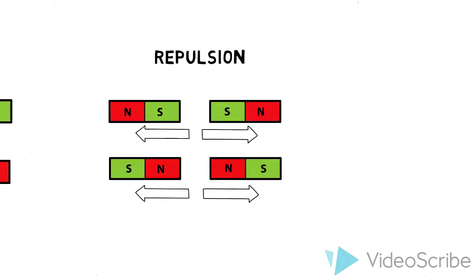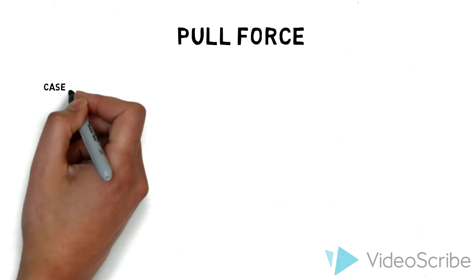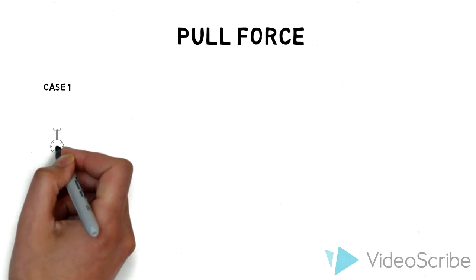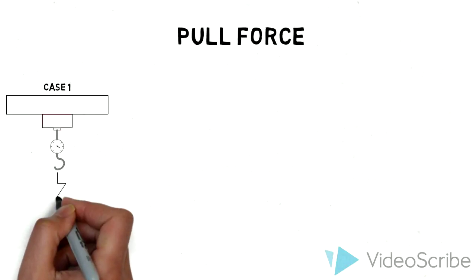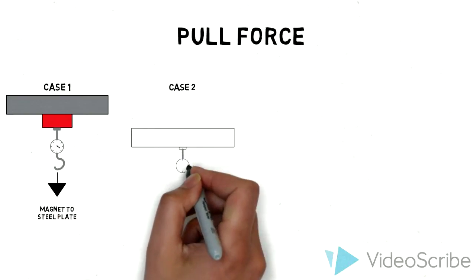How is this force measured? This force, often called the pull force, can be measured four different ways. The first, most common way measures a magnet to a steel plate. Using a special pull force gauge, the magnet is pulled perfectly vertical off of the steel plate.